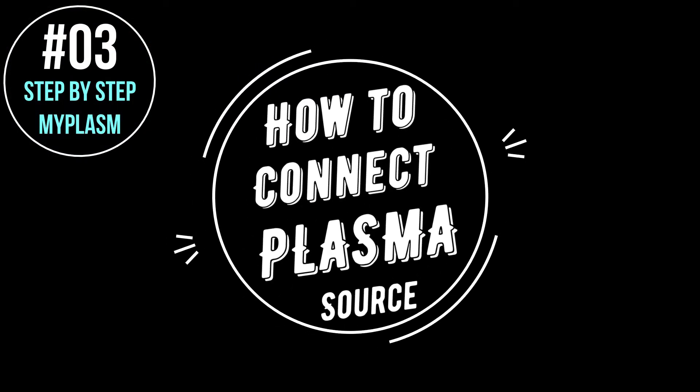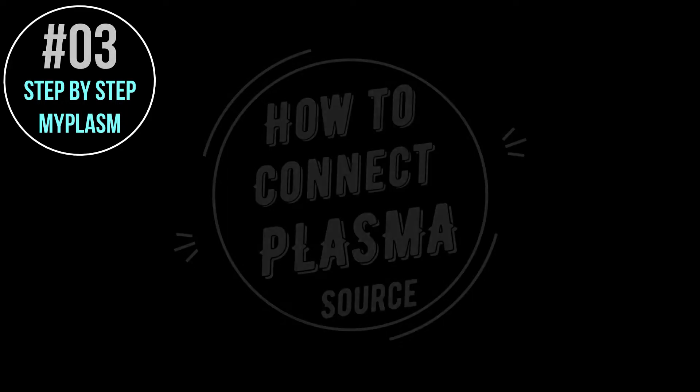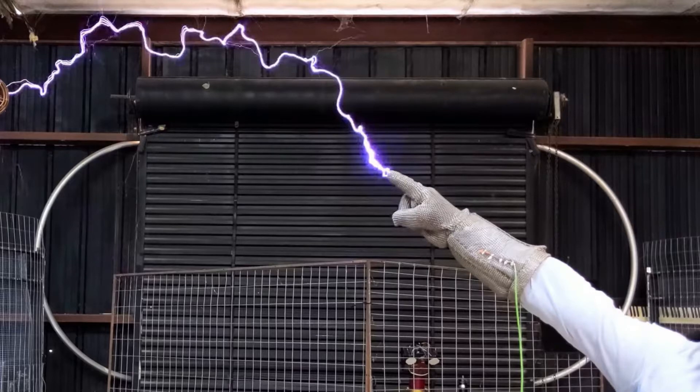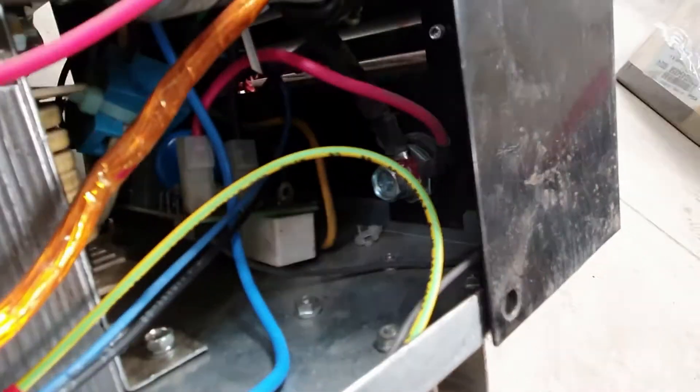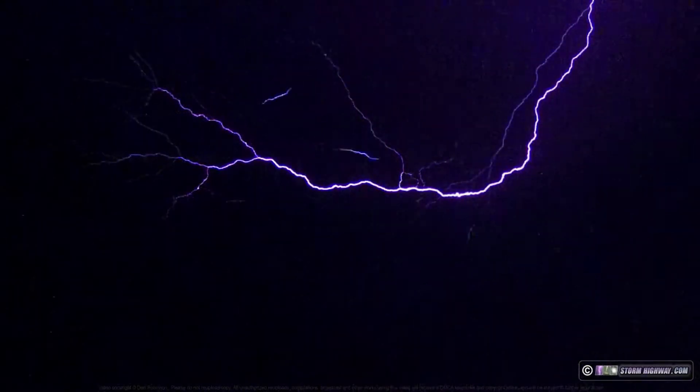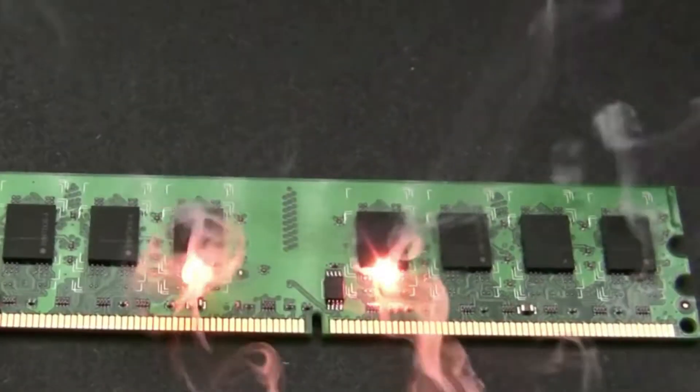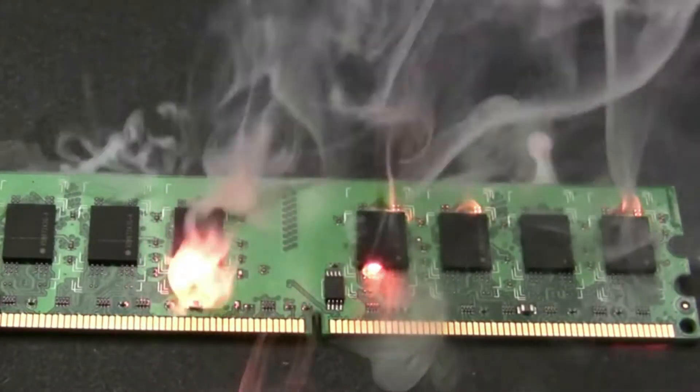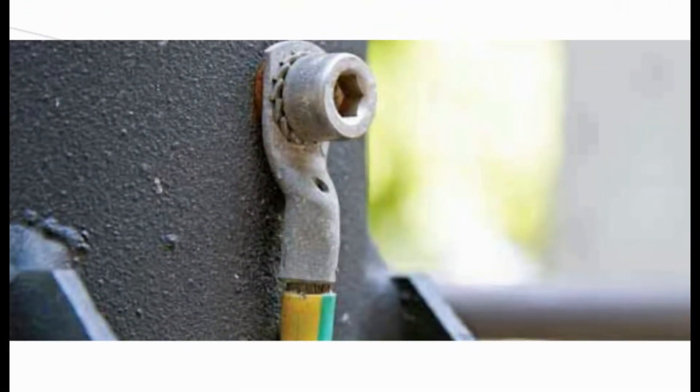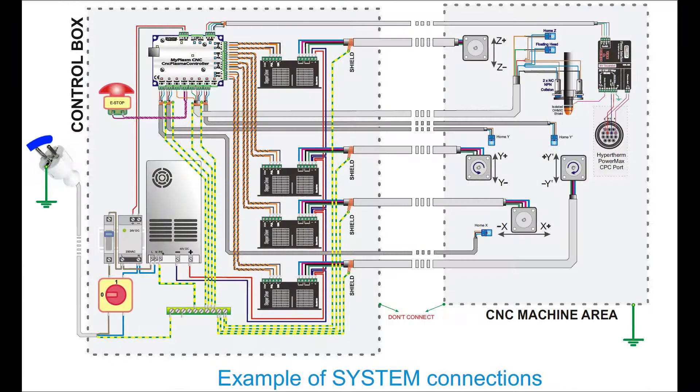Connecting and starting the plasma source. Remember that the plasma source generates high voltage which is dangerous to life and health. Connection should be carried out by an authorized person. In addition, the plasma arc generates very high interference and overvoltage which can disturb or damage electronic equipment. It is not permissible to use the machine without protective earth correctly connected.